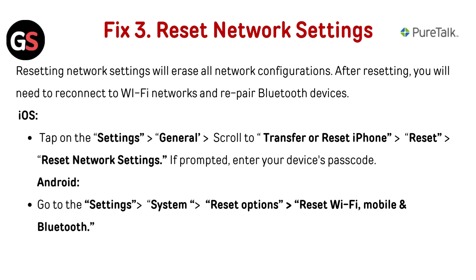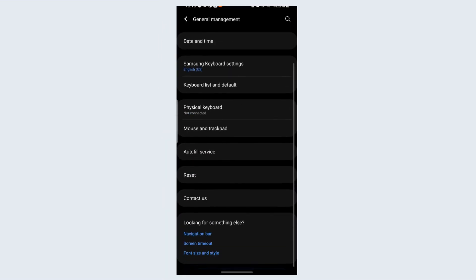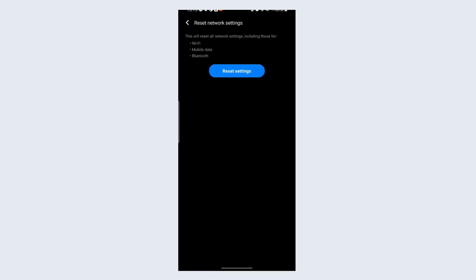Fix 3: reset network settings. Resetting network settings will erase all network configurations. After resetting, you will need to reconnect to Wi-Fi networks and repair Bluetooth devices. For iOS, tap on Settings, then go to General, scroll to Transfer or Reset iPhone, then go to Reset, and select Reset Network Settings. If prompted, enter your device's passcode. For Android, go to Settings, then System, Reset Options, then reset Wi-Fi, mobile, and Bluetooth.